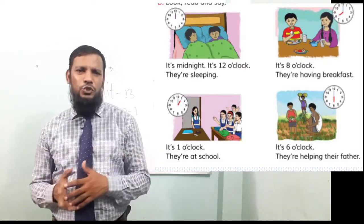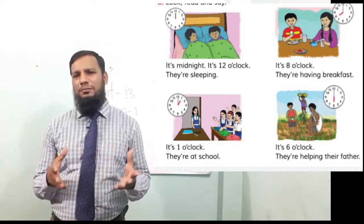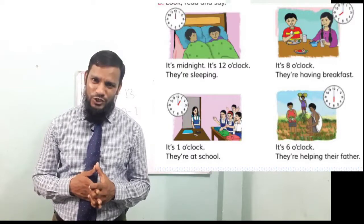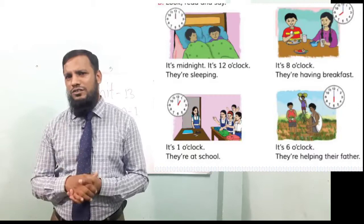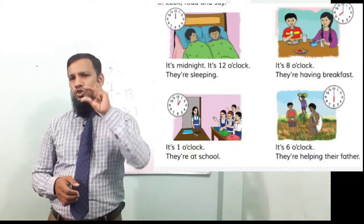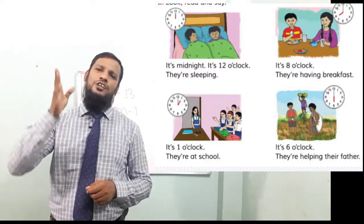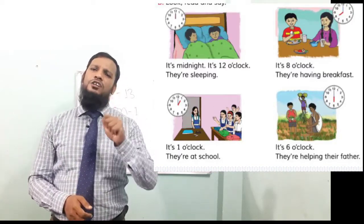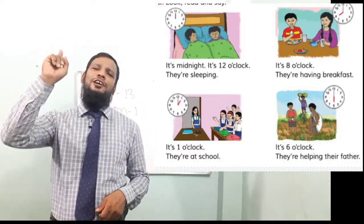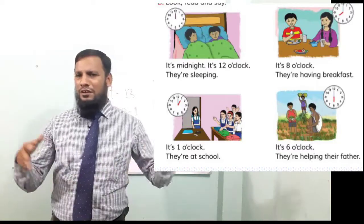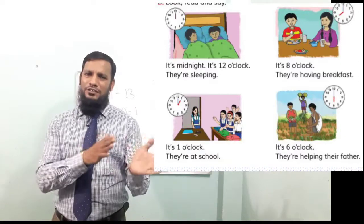In picture two, we can see they are taking their breakfast. In the watch, the short hand is striking at eight and the long hand is striking at twelve. That means the hour hand is at eight and the minute hand is at twelve. So it is eight o'clock. They are having their breakfast.